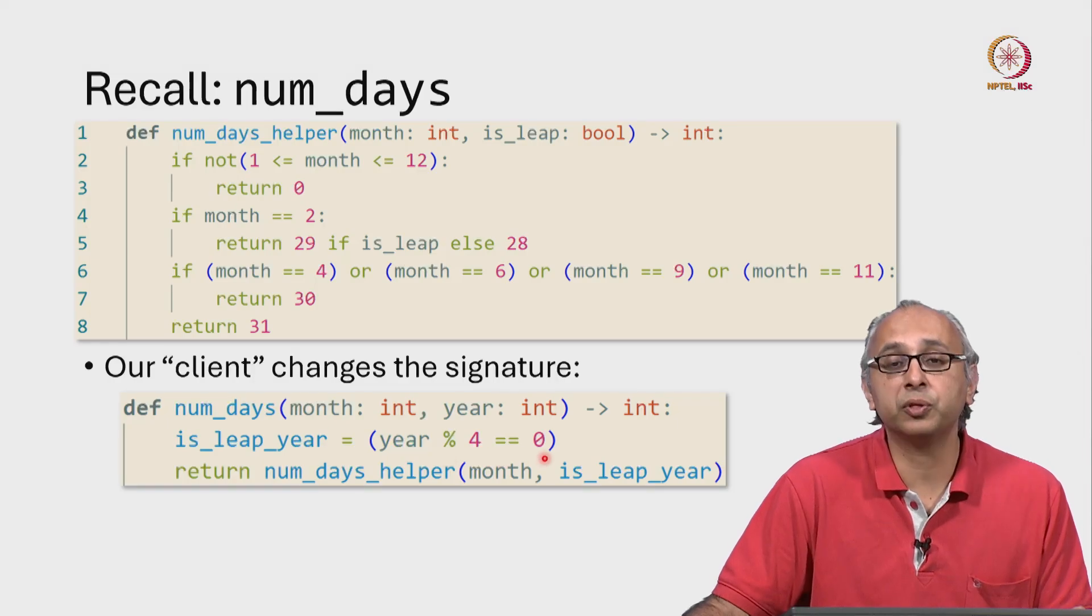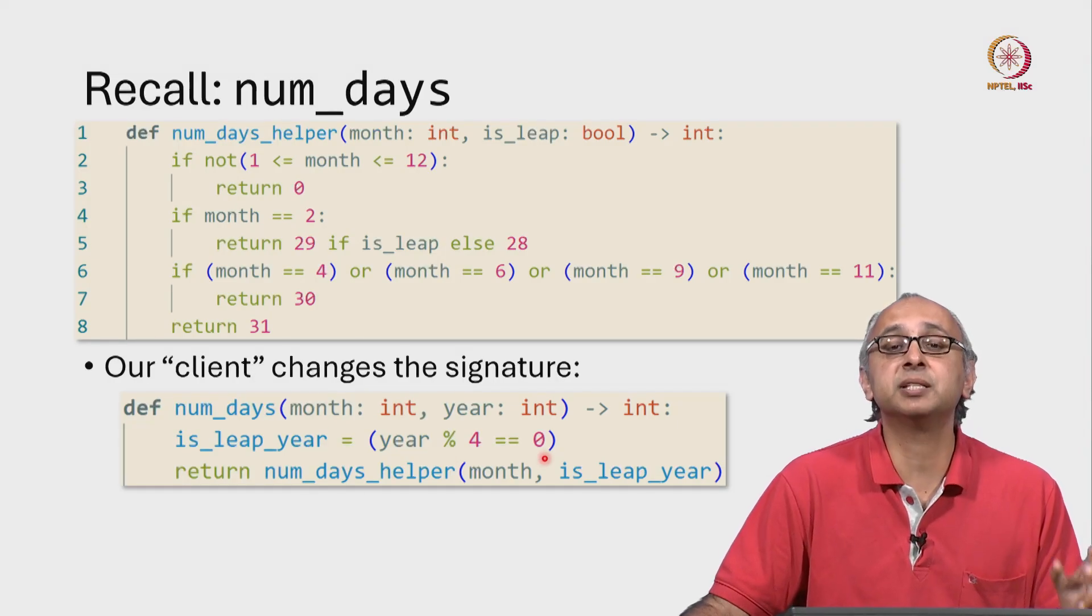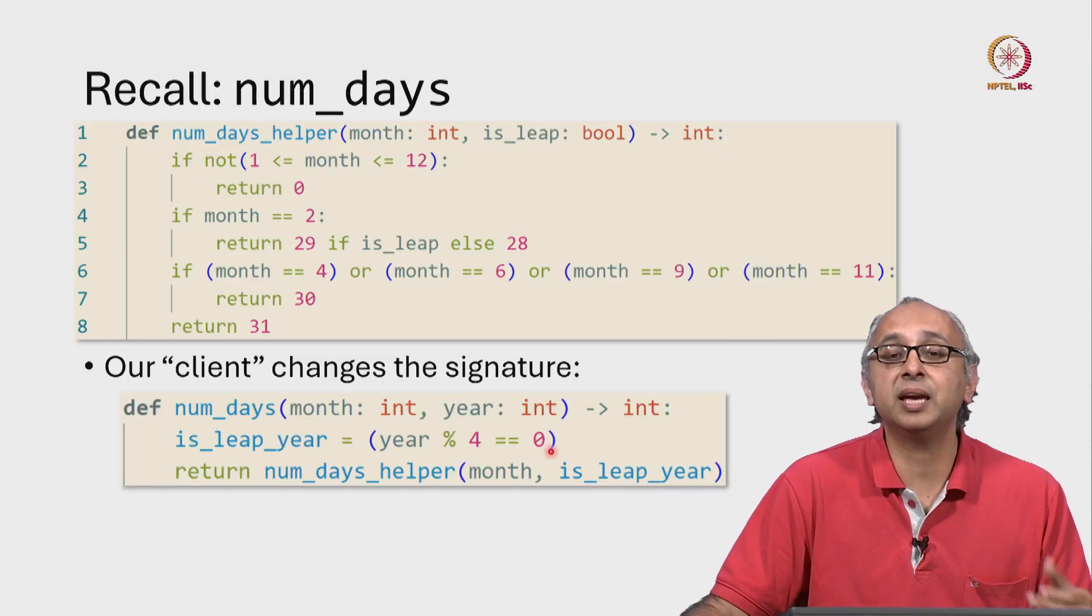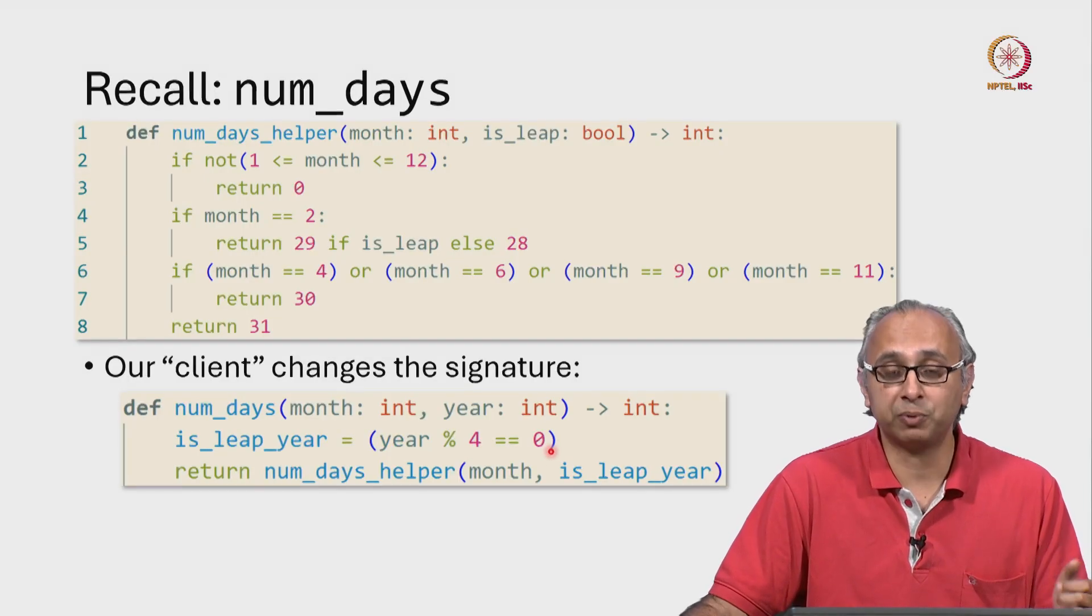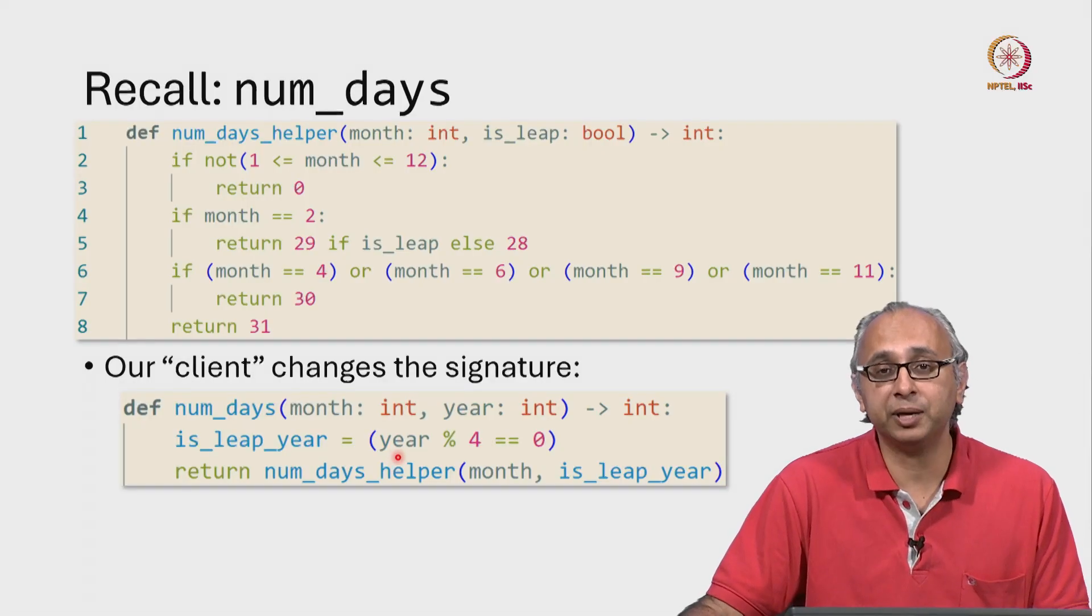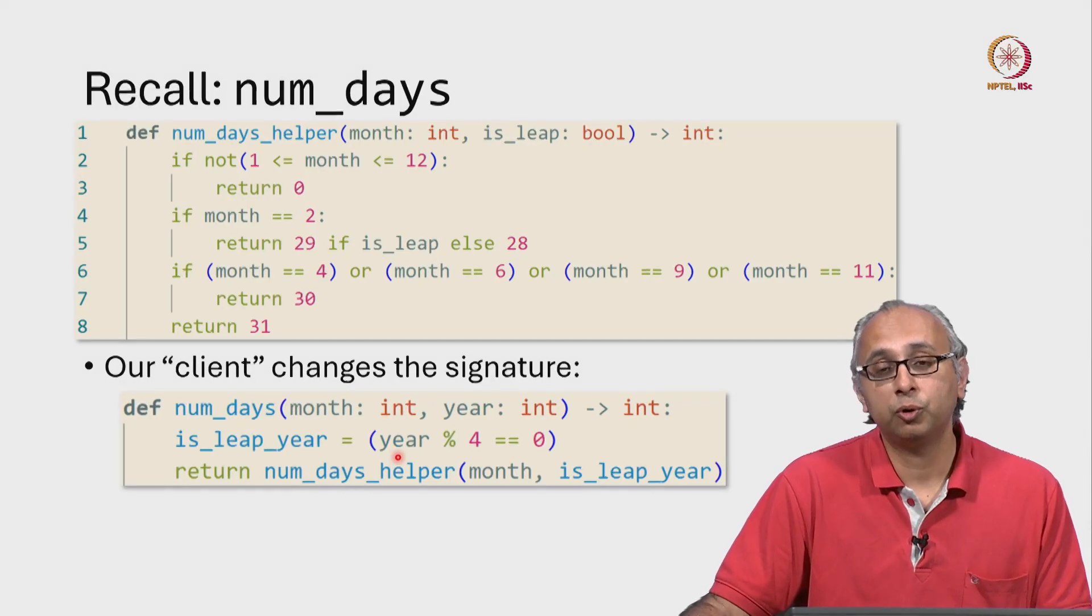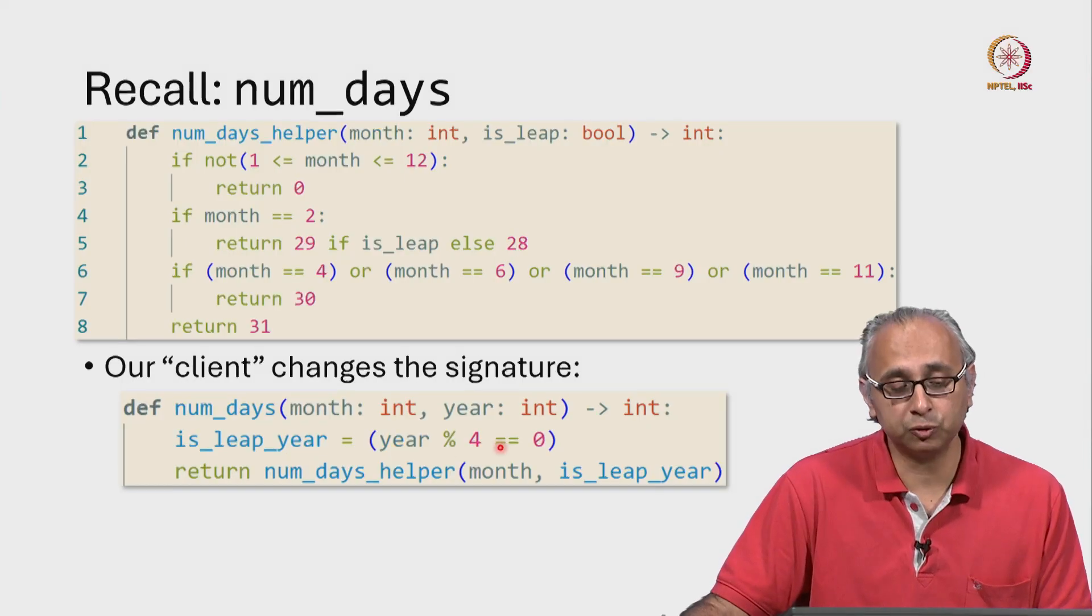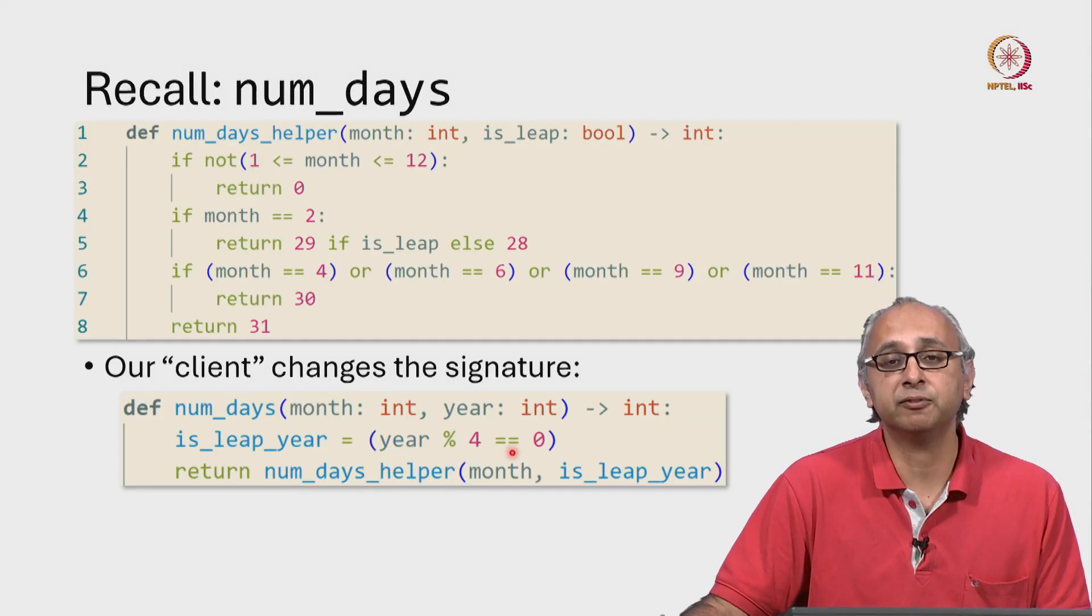Remember this expression on the right hand side of the assignment statement is evaluated first. And in this case, since this is a boolean expression, this expression inside the parentheses will evaluate to either true or false. And this variable will be assigned to that boolean value.